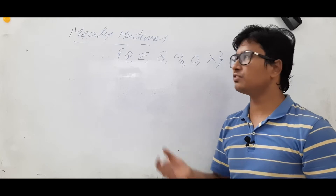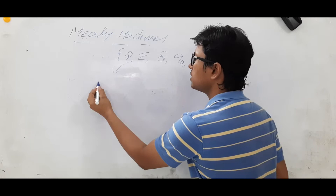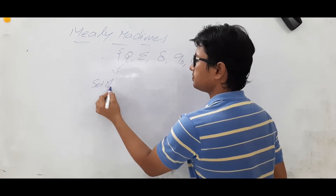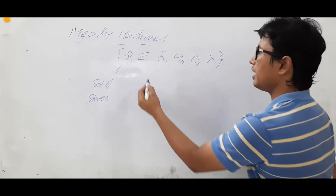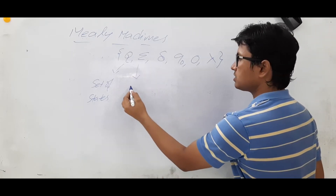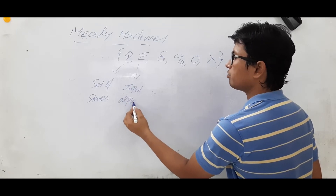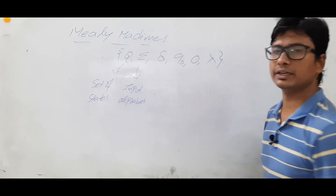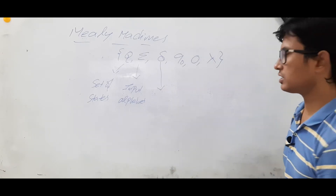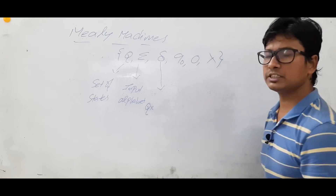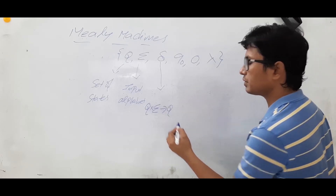But what is the basic difference between a Mealy machine and a Moore machine? You will understand now. Q represents the set of states, sigma represents the input alphabets — what are the alphabets you are taking as input. The transition function delta follows the deterministic finite automata: on some alphabet from state q you go to another state q.